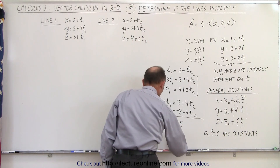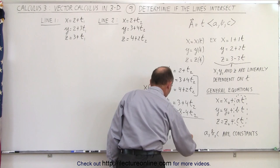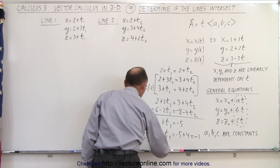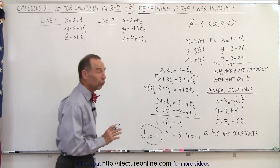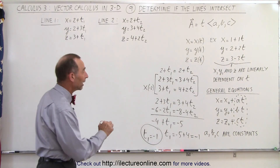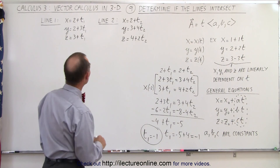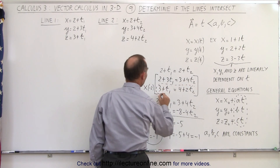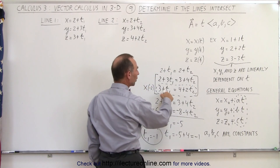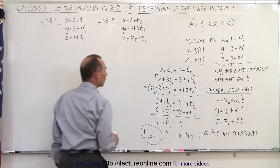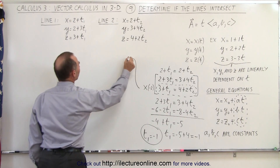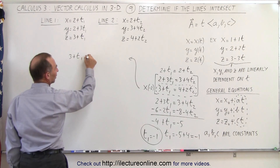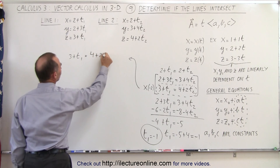Moving the minus 4 across, we get t1 equals minus 5 plus 4, which equals negative 1. So t1 equals negative 1 is a necessary condition. Now let's find what t2 will be equal to. I'm going to take this equation — 3 plus t1 equals 4 plus 2t2 — and plug in negative 1 for t1 to find the corresponding t2.